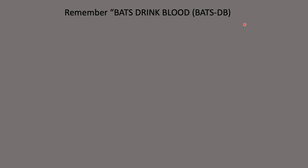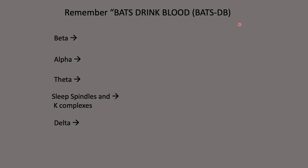If you watched the last video on sleep stages you'll know some of the names of the waves — I recommend you watch that first. If we write out BATS DB in terms of what we see during the different sleep stages, we get: Beta, Alpha, Theta, Sleep Spindles and K-complexes, Delta, and Beta again.